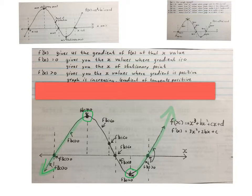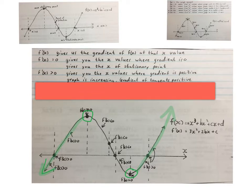Next: f'(x) is bigger than zero — where is the first derivative positive? It gives you the x values where the gradient is positive, the graph is increasing, and the gradient of the tangents is positive. That is all the x values where the graph is green, excluding the stationary points. Everywhere where you see the green line, those x values are being spoken about.